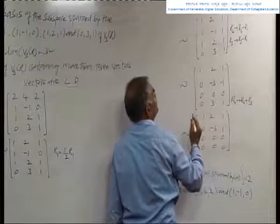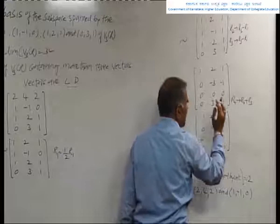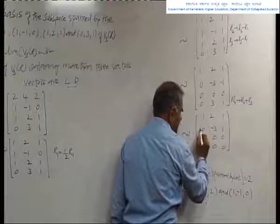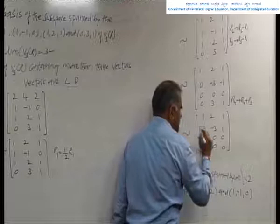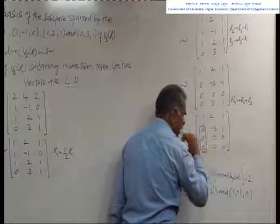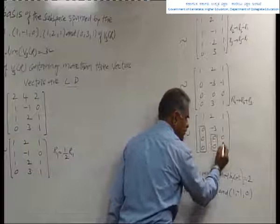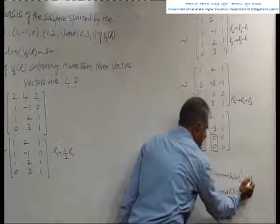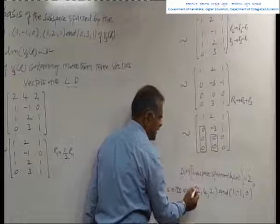After further operations, the fourth row elements become all 0. This is the final echelon form. The first row's first column element is unity with zeros below; the second row's second column element is non-zero (marked as -3) with zeros strictly below. Since we have only two non-zero rows, the dimension of the subspace spanned by the set of vectors is 2.